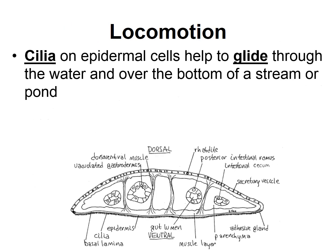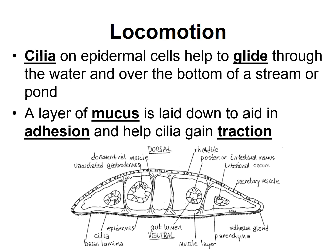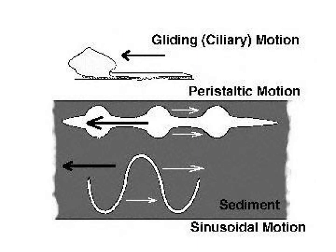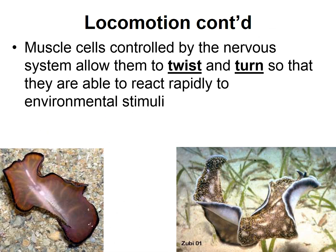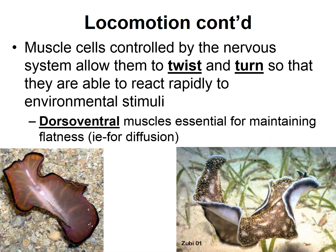For locomotion, they have cilia on their epidermal cells that help them glide through the water and over the bottom of streams or ponds. A layer of mucus is usually laid down to help them adhere and get traction. Their muscles are controlled by the nervous system, allowing them to twist and turn in response to stimuli. They have dorsoventral muscles that are essential for helping them maintain their flatness — running from their back to their belly — so they can easily diffuse things into their bodies.